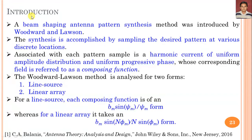As discussed in lecture 1 of the Array Synthesis series, the Woodward-Lawson method is a beam shaping antenna pattern synthesis method introduced by Woodward and Lawson. The synthesis is accomplished by sampling the desired pattern at various discrete locations. Associated with each pattern sample is a harmonic current of uniform amplitude distribution and uniform progressive phase, whose corresponding field is referred to as a composing function. In this method, we analyze two forms.